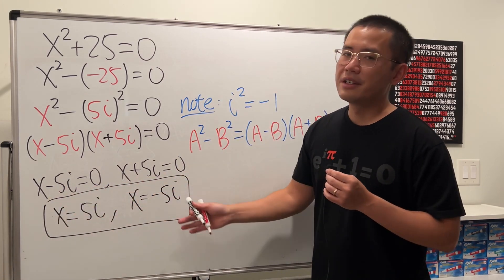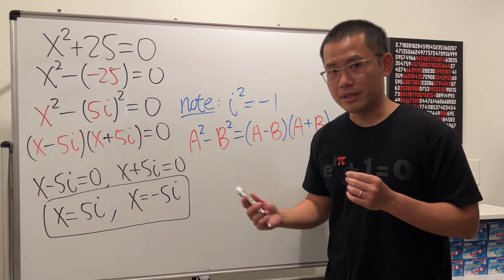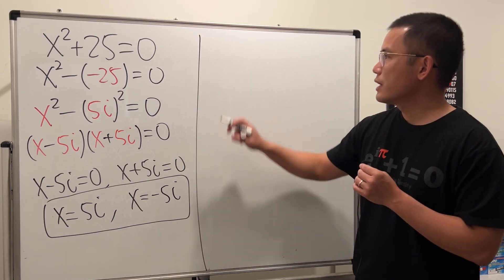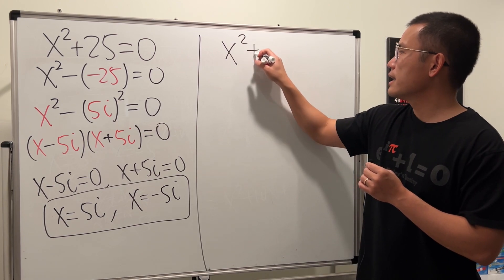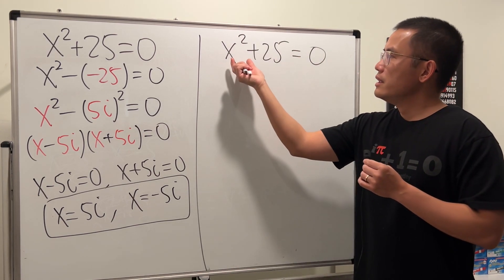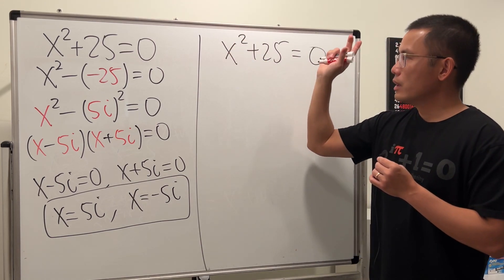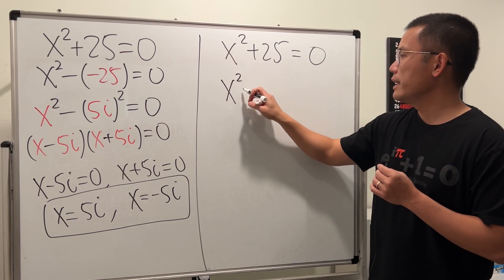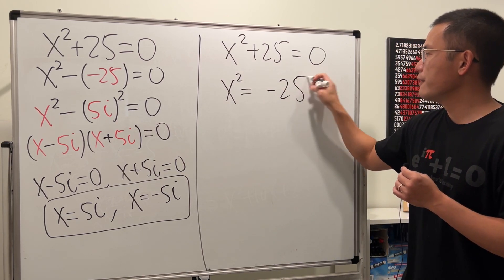These are the answers to the original equation. How about the second way though? It's actually much quicker. Let's have a look. x² + 25 = 0. This is just x². I want to keep it by itself. So let's subtract 25 to both sides. So x² = -25.